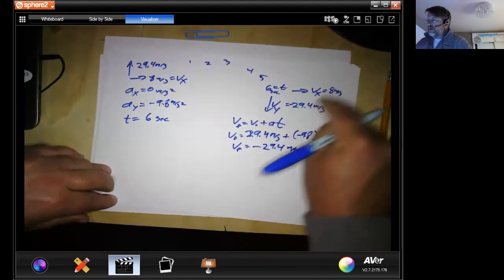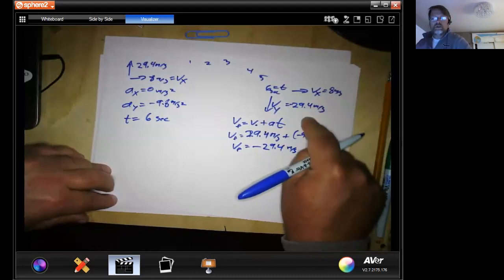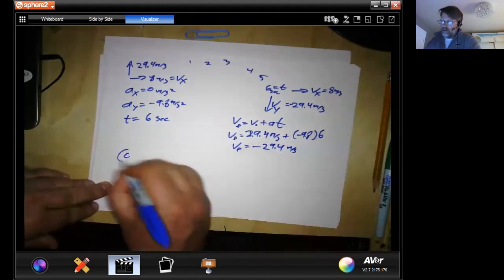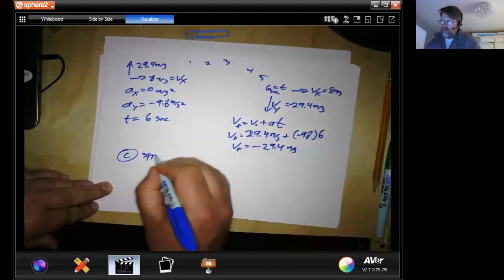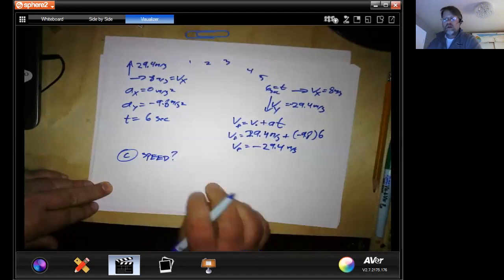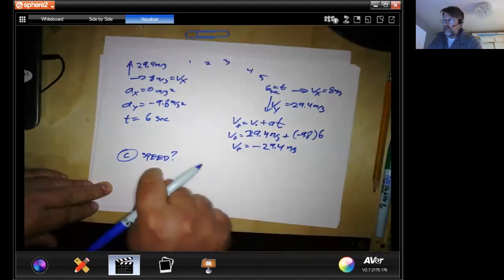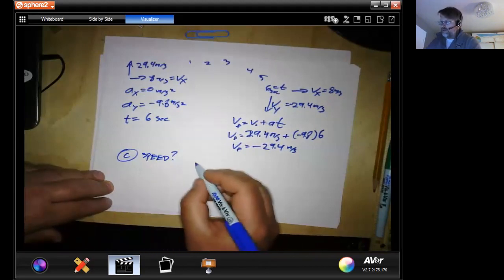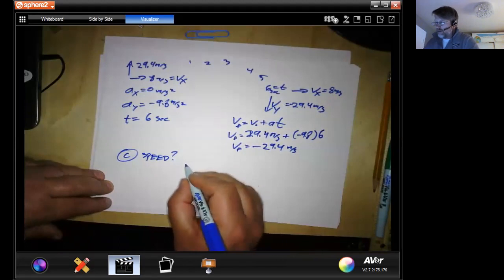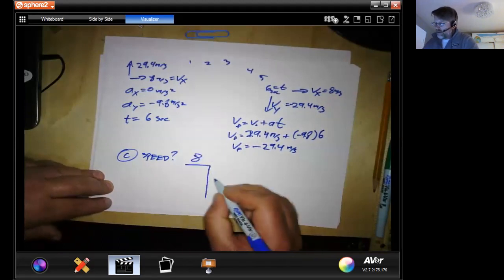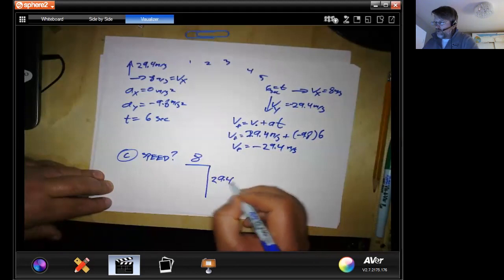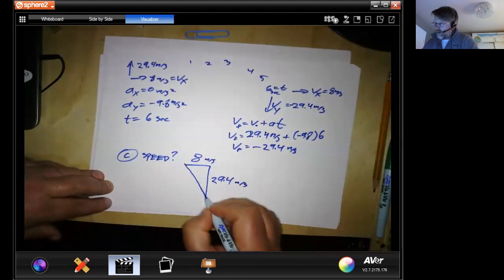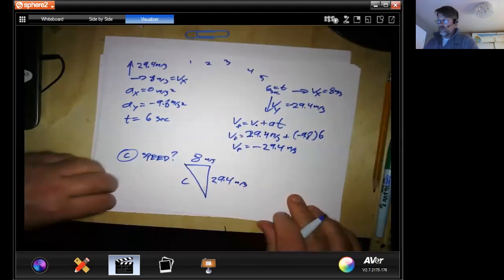So those are our component vectors. But you'll notice in part C, it says speed. Which does not care about direction. It wants only magnitude. Which means if we have a triangle here that goes over eight and down 29.4, it wants that number.